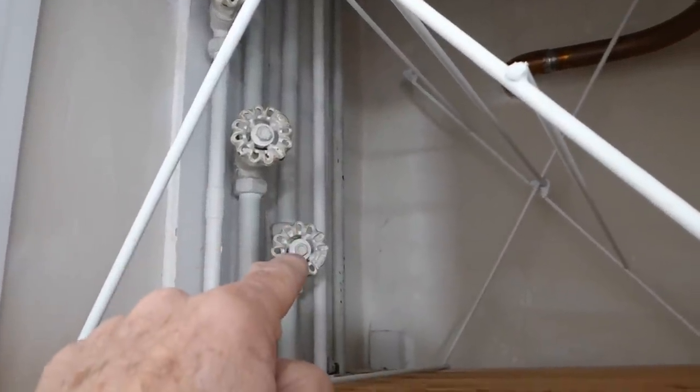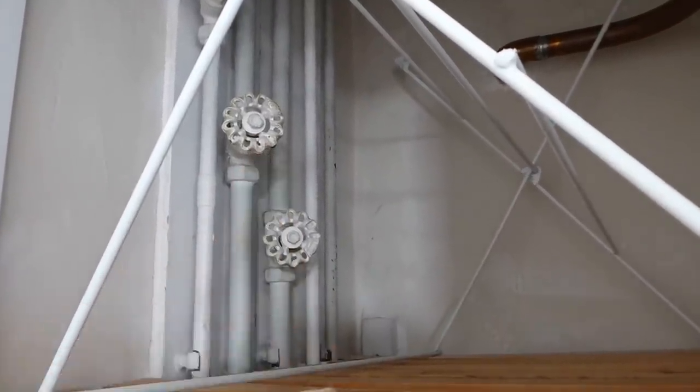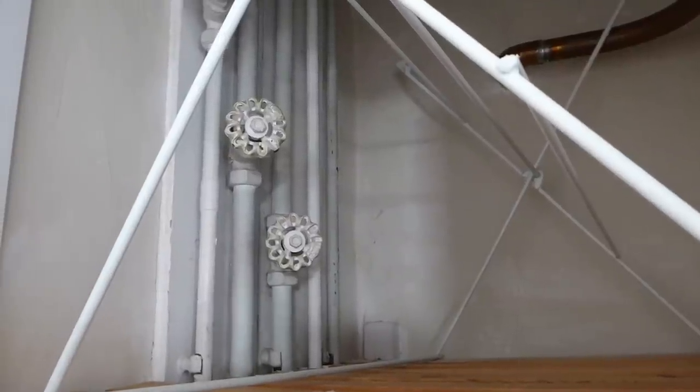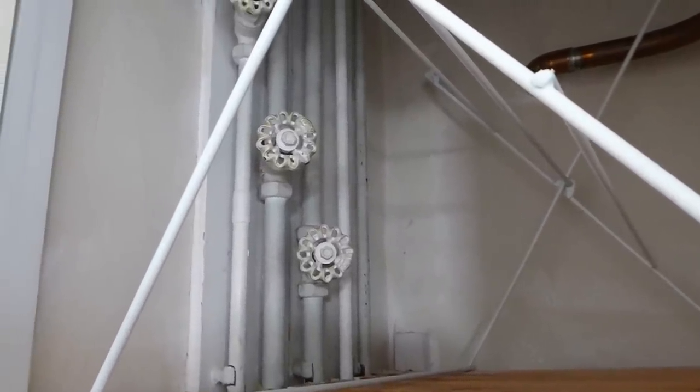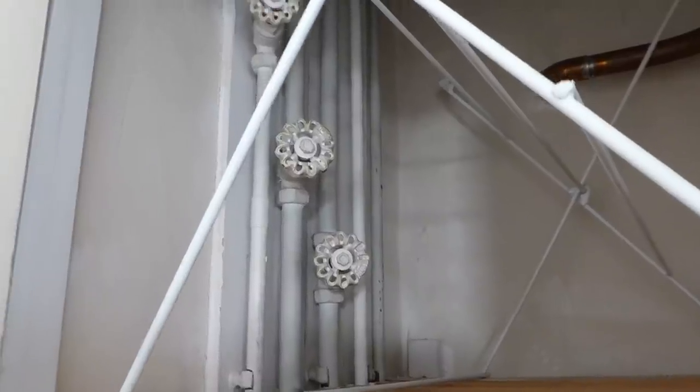The other two, one shuts the cold feed to the bathroom off and the other one shuts the hot water off. All we've got to do is follow the pipes down to the tank and see if it goes into the tank and you'll see which one is which.